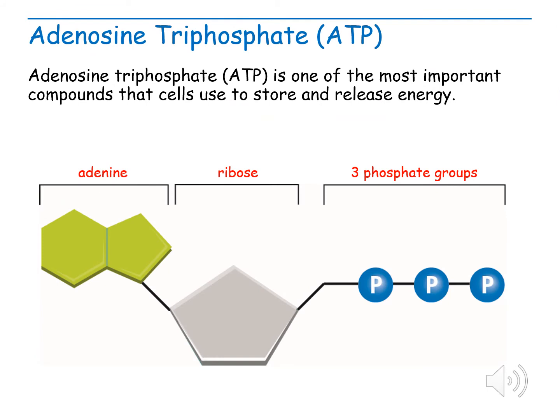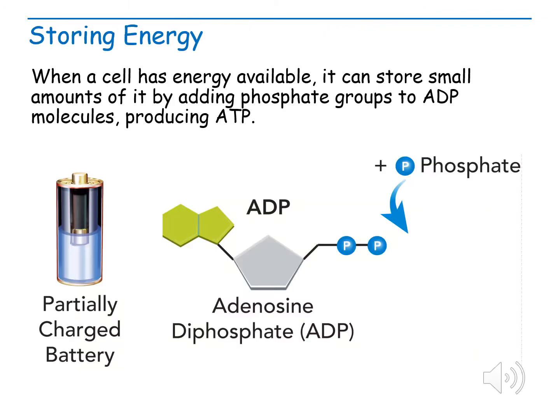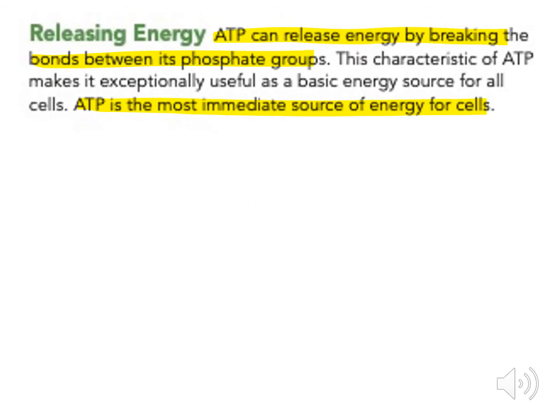Adenosine triphosphate is one of the most important compounds that cells use to store and release energy. Adenosine diphosphate has two phosphate groups instead of three. When a cell has energy available, it can store small amounts of it by adding phosphate groups to ADP molecules, producing ATP. ATP can release energy by breaking the bond between its phosphate groups.